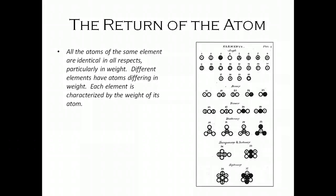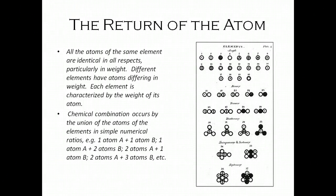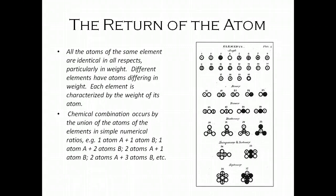When the only tool you have is a hammer, everything becomes a nail. He was fixated on weight, and we're going to see as we move on in the history of chemistry that this ended up causing problems. It turns out weight is not the most important characteristic of atoms in determining their properties. Chemical combination occurs by the union of the atoms of elements in simple numerical ratios: one atom of A to one atom of B, one atom of A to two atoms of B, two atoms of A to one atom of B.